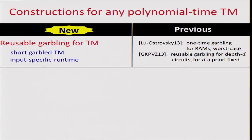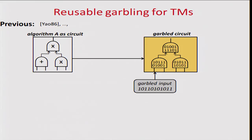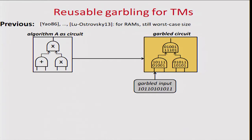More concretely, we construct reusable garbling for Turing machines. Instead of garbling a circuit, we garble a Turing machine, and the size of the garbled Turing machine depends only on the description of the Turing machine, not on its worst-case running time. Previously, we had garbling schemes for circuits due to Yao, and more recently schemes for RAMs due to Lu and Ostrovsky that have more efficient memory access, but the garbled RAM size and evaluation time are still worst-case. Also, garbled circuits could only be used one time until recently, when Goldwasser et al. constructed reusable garbled circuits allowing an unbounded number of inputs.